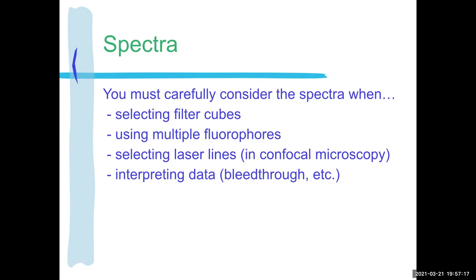Why do we need to remember that excitation and emission wavelengths aren't actually just one wavelength — they're actually a spectra? Because anytime you're doing fluorescence you need to think about this when selecting the filter cubes for imaging. You absolutely have to know this when you're going to use multiple fluorophores — multiplexing. You don't always have the perfect filter cube, but because there's a whole spectra, you might be able to see the fluorophore you want using a filter cube originally intended for a different fluorophore, if you know the spectra and know what the filter cube is.